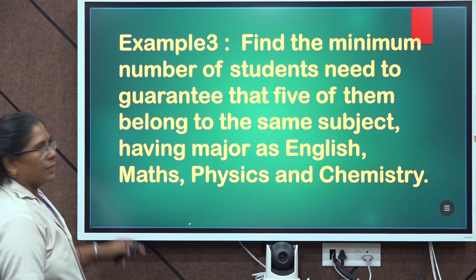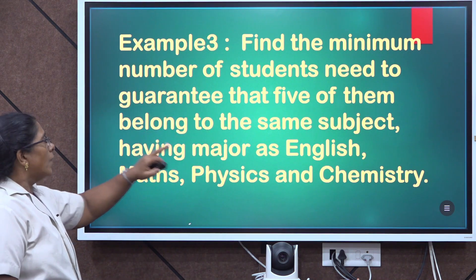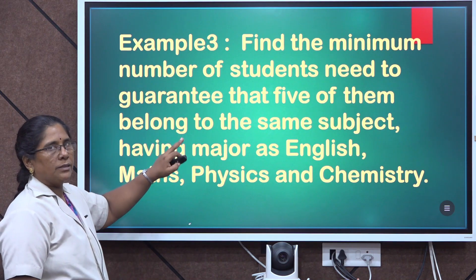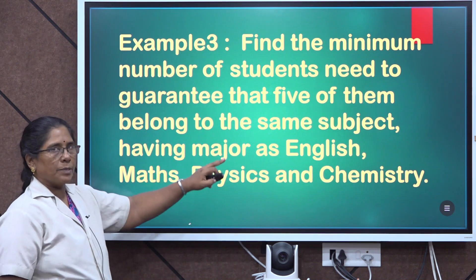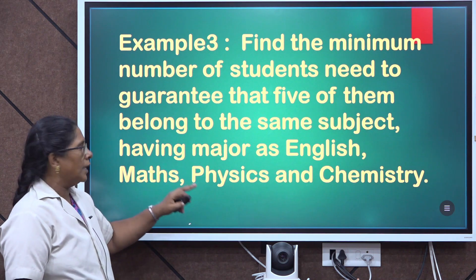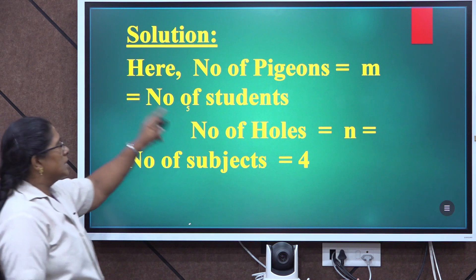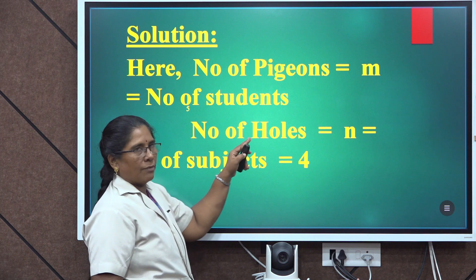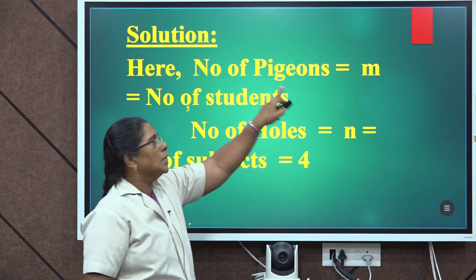Now let us see one more example of a different category. Here we are supposed to find the minimum number of students needed to guarantee that 5 of them belong to the same subject, with majors being English, Maths, Physics, and Chemistry. Here the larger data — number of students — is not given, but the smaller data, number of subjects, is 4. So N equals 4, and we need to find M.